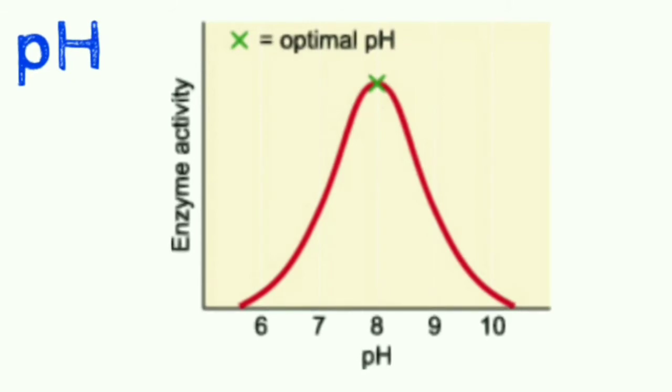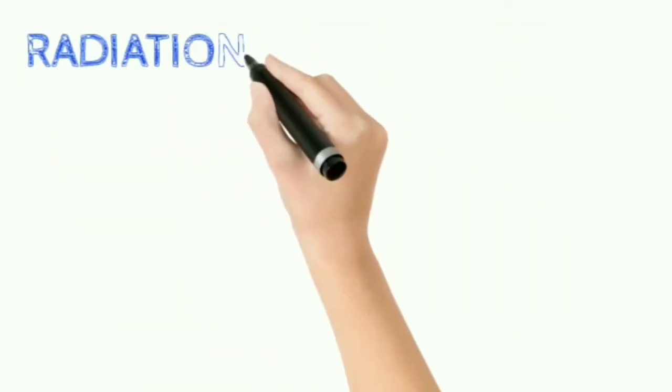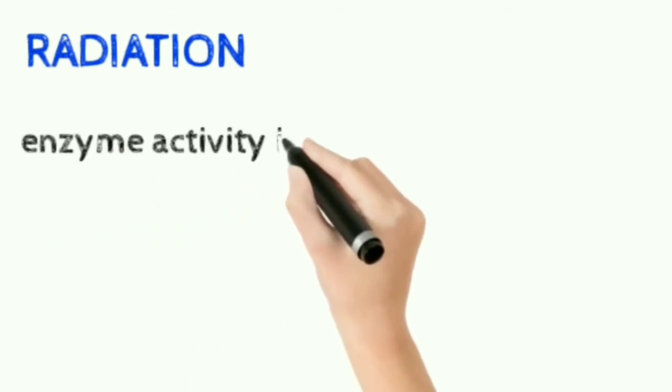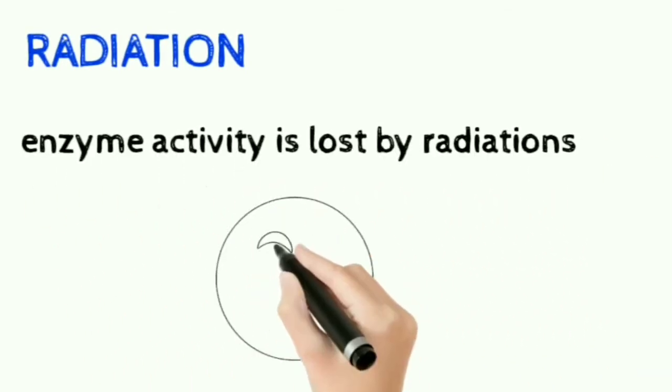Now examples are pepsin, which works at pH 1 to 2, and alkaline phosphatase at 9 to 10. Now the next factor that affects enzyme activity is radiation. The enzyme activity is lost by radiation.